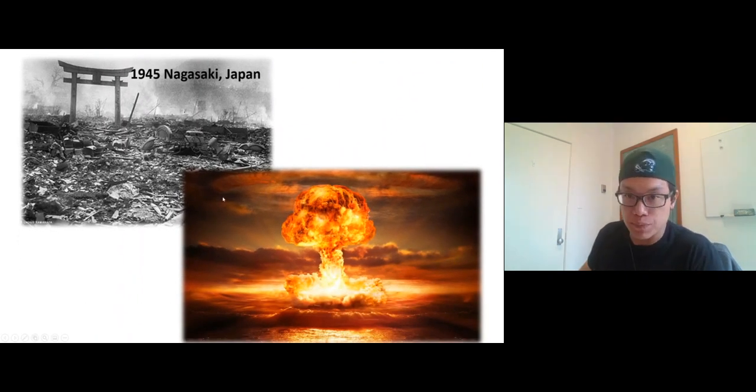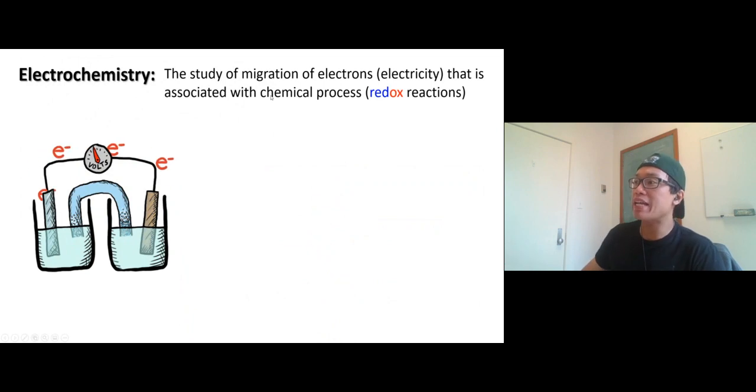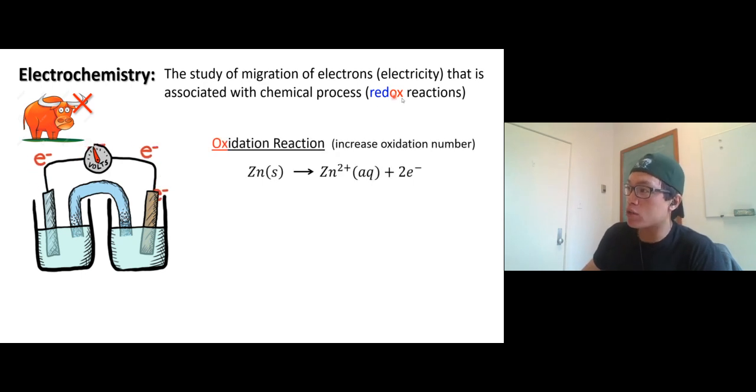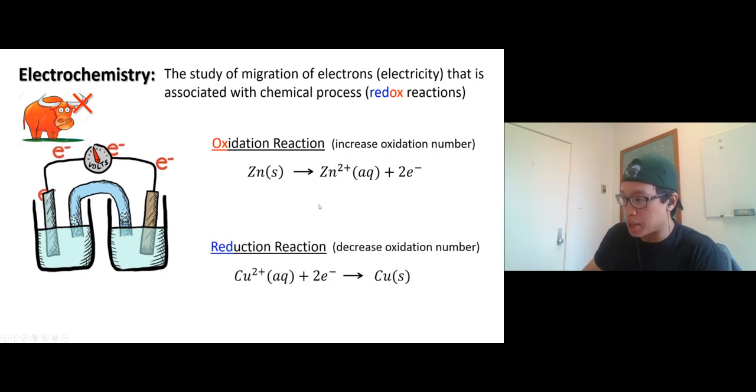All right, electrochemistry: it's the study of migration of electrons associated with chemical process, or we call redox reaction. Don't read it 'redox'—we have reduction and oxidation, that's why we call redox reaction. Half of the redox reaction comes from oxidation reaction which is the increase in oxidation number. Zinc zero—this is the regular zinc element—goes to plus two. Increase in oxidation number, we call oxidation reaction. Copper receives electron, becomes copper zero. This we call reduction reaction or decrease in the oxidation number. One of them loses electron, one of them gains electron. These two together we call redox reaction.